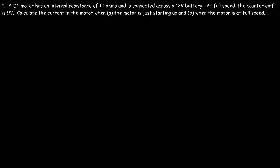A DC motor has an internal resistance of 10 ohms and is connected across a 12-volt battery. At full speed, the counter EMF (also known as back EMF) is 9 volts. Calculate the current in the motor when the motor is just starting up and when the motor is at full speed. Whenever current flows through a motor, the motor spins and there is a constant change in magnetic flux, creating an induced EMF that opposes the change in flux according to Lenz's law. The rate at which the motor turns is proportional to the induced EMF, so as speed increases the counter EMF increases. When speed is zero, there is no counter EMF.